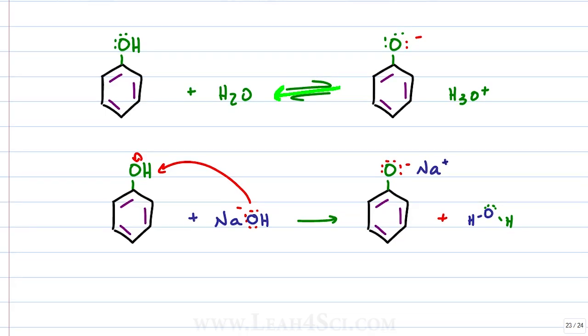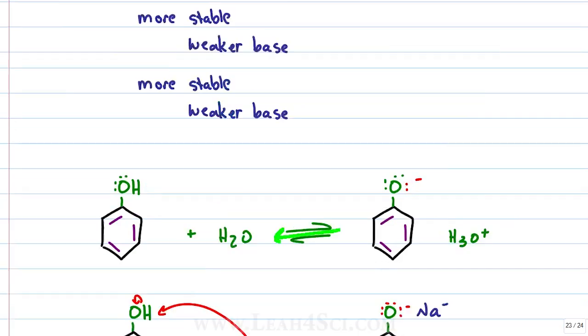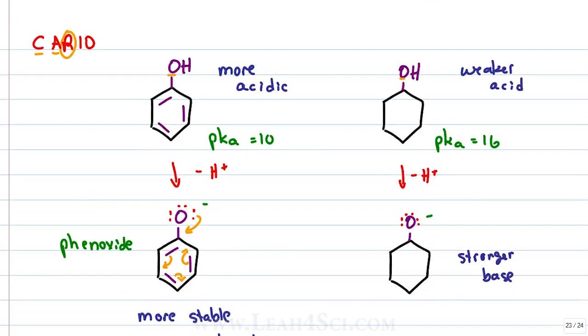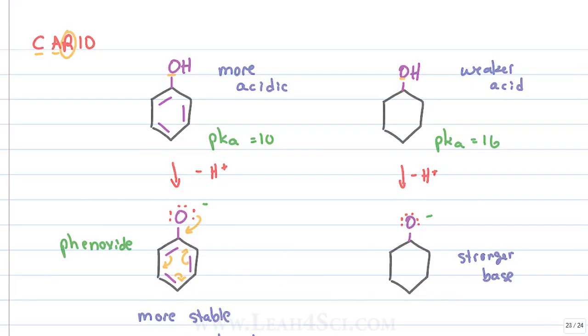You may be asked to rank the acidity of phenols against other alcohols, for example cyclohexanol, which we've already discussed. But what if you have to rank it against a non-alcohol? For example, which is the stronger acid: phenol or ethanoic acid? If we look at CARIO, the charge is the same—they're both neutral. Atom is the same because we're comparing the oxygen holding a hydrogen. Resonance—well, they both have resonance. So which one wins?